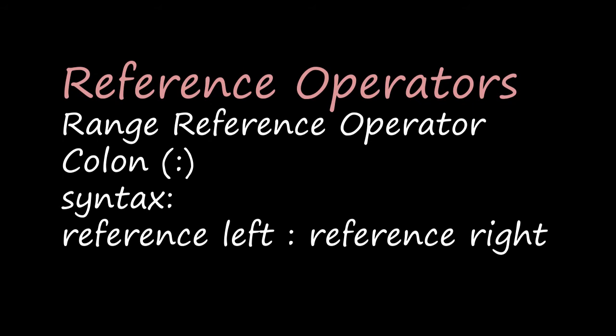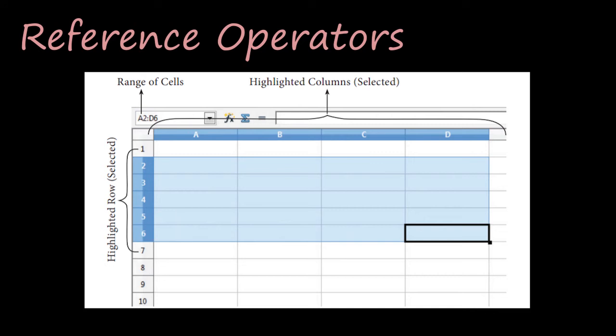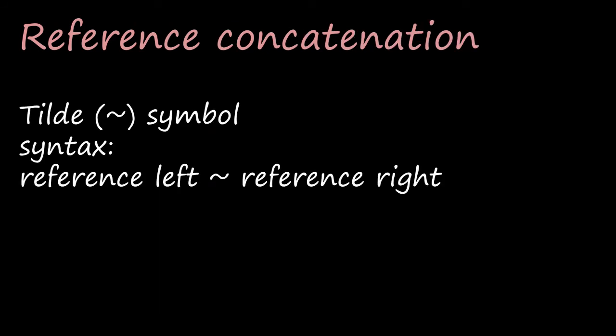Reference-left means the starting cell or the upper-left corner address, and reference-right is the last cell address or the lower-right corner address. For a linear group of cells A1 to A5, it is referred as A1 colon A5. For a rectangular group - A1, A2, A3, then B1, B2, B3 till B6 - it is given as A2 colon D6. The name box will show the reference corresponding to cells highlighted in the drag operation.